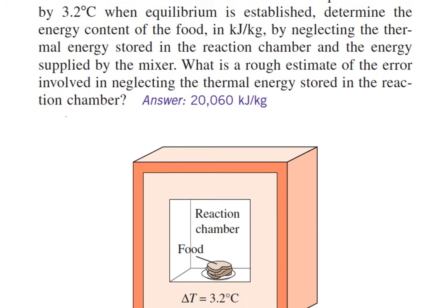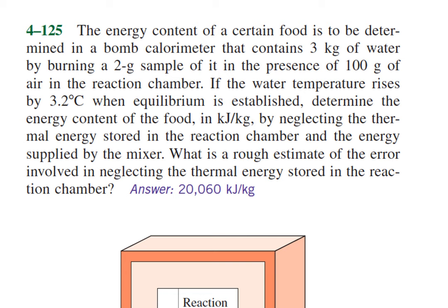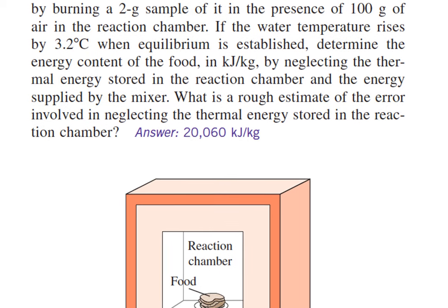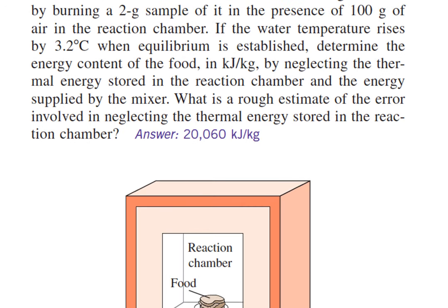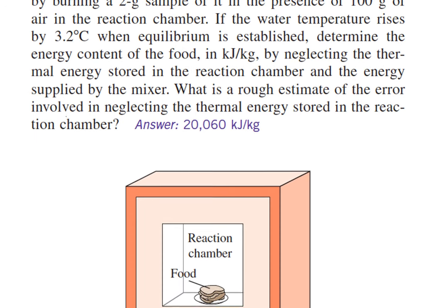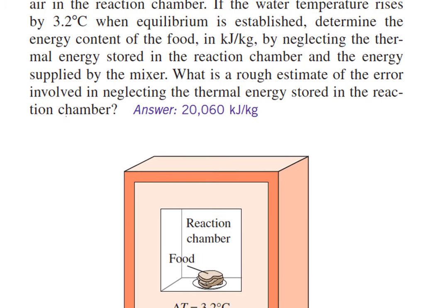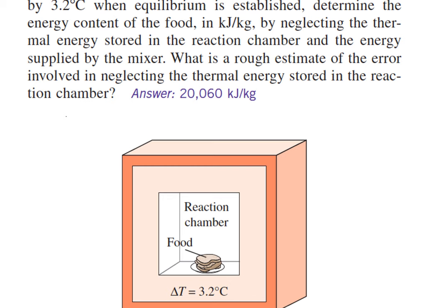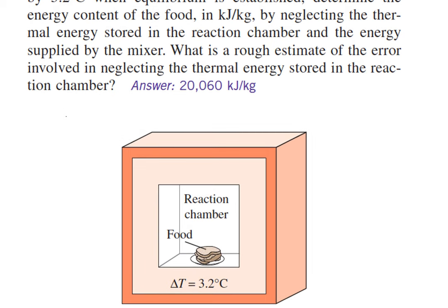For this example, we have a calorimeter. I just have the problem blown up, so hopefully you can see it. Basically, it says the energy content of a certain food is to be determined in a bomb calorimeter that contains 3 kilograms of water. We're burning a 2-gram sample of food with 100 grams of air. If the water temperature rises by 3.2 degrees Celsius, determine the energy content of the food in kilojoules per kilogram, and we're going to neglect the thermal energy stored in the reaction chamber and the energy supplied by the mixer.